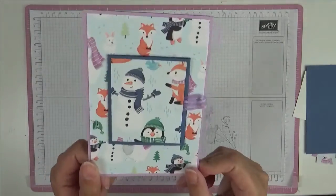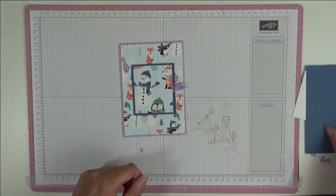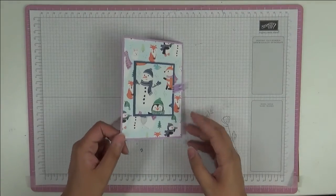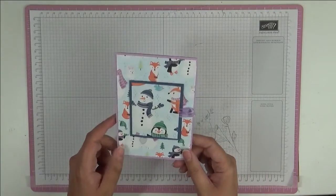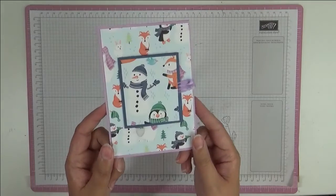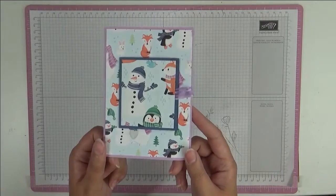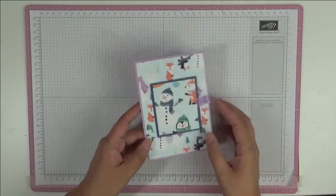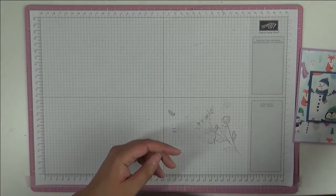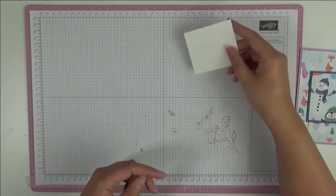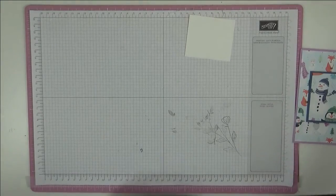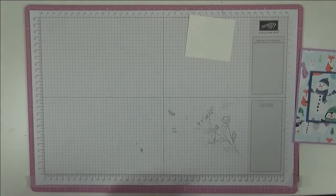The reason I'm using this paper is it's a freebie that you can get during Celebration, which is August through September. For every £45 you spend, you can get a free item, and this penguin paper is one of the free items. As a crafter, it's never too soon to get started with your Christmas projects. If you're making all handmade cards for Christmas, it takes a bit of time, so you need to get started early.